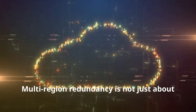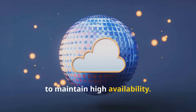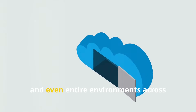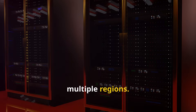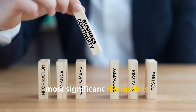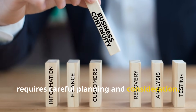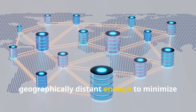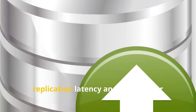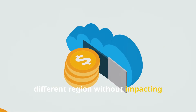Multi-region redundancy is not just about backing up your data — it's about strategically distributing your resources to maintain high availability. This might involve replicating your databases, applications, and even entire environments across multiple regions. The goal is to create a resilient architecture that can withstand even the most significant disruptions. Achieving this requires choosing regions that are geographically distant enough to minimize the risk of simultaneous outages, while also factoring in data replication latency and ensuring your applications can seamlessly failover to a different region without impacting performance.